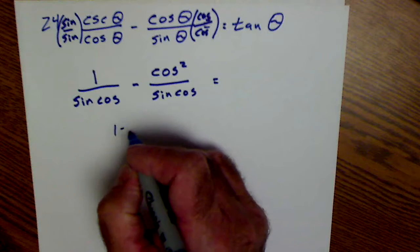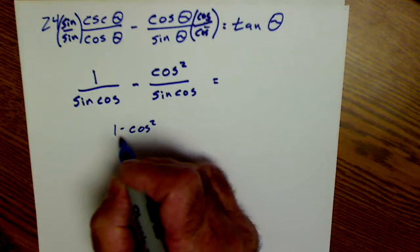Now I'm going to combine them. I have 1 minus cosine squared of theta all over sine cosine.